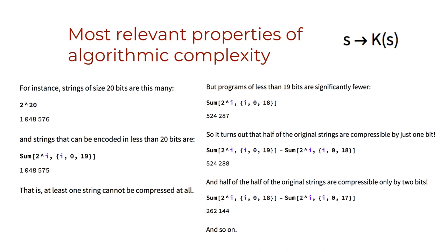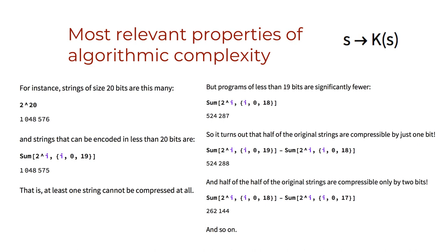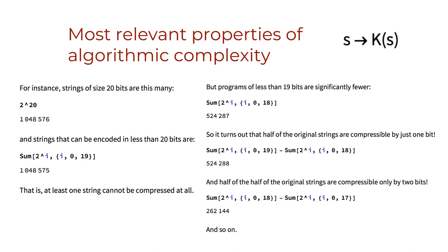Another important property of algorithmic complexity is also commonly seen as its greatest burden, that is, its uncomputable nature. A function is uncomputable if there is no Turing machine that is guaranteed to produce an output for its inputs, or in other words, if the machine computing the function doesn't always halt for a number of inputs.